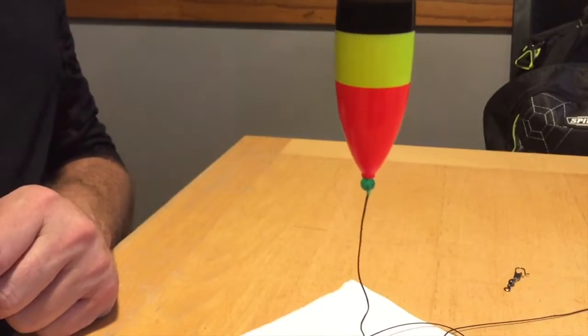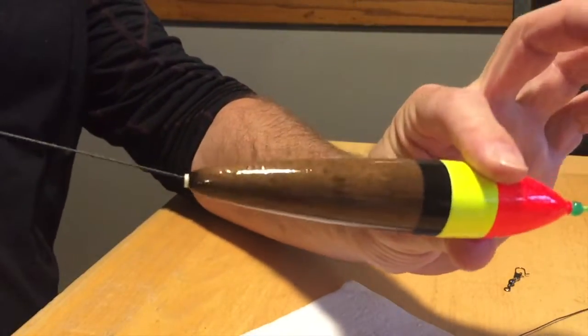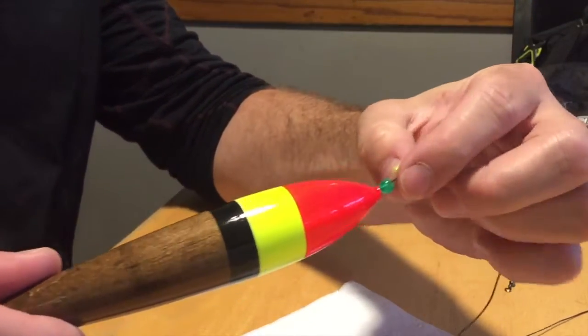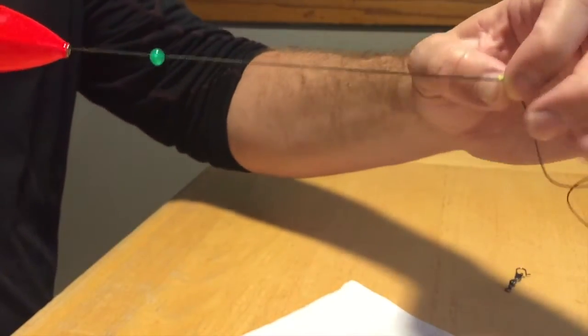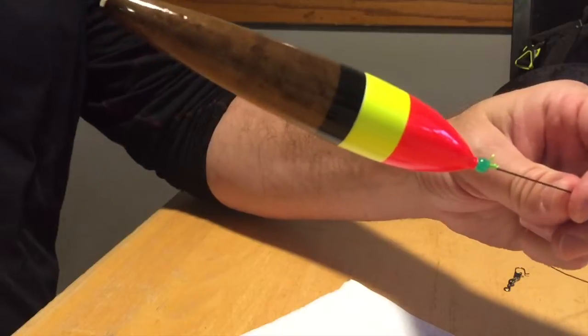So that's the height. And then if you want to raise that, you just pull on the string. The string goes up, and then the bead and the bobber follow.